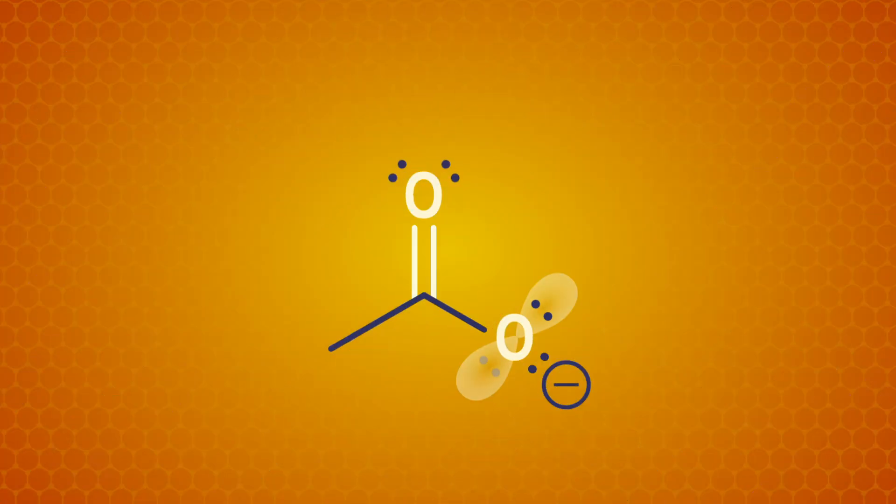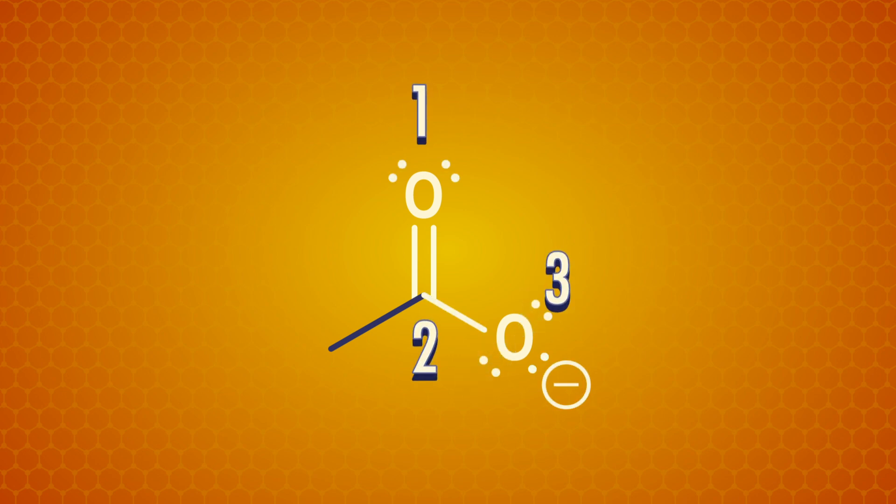So, though identifying resonance forms can be really tricky, we can approach these puzzles three atoms at a time. To start, we need to find a pi bond and an adjacent p orbital with zero, one, or two electrons in it. These three atoms are involved in resonance, so let's number and box them.